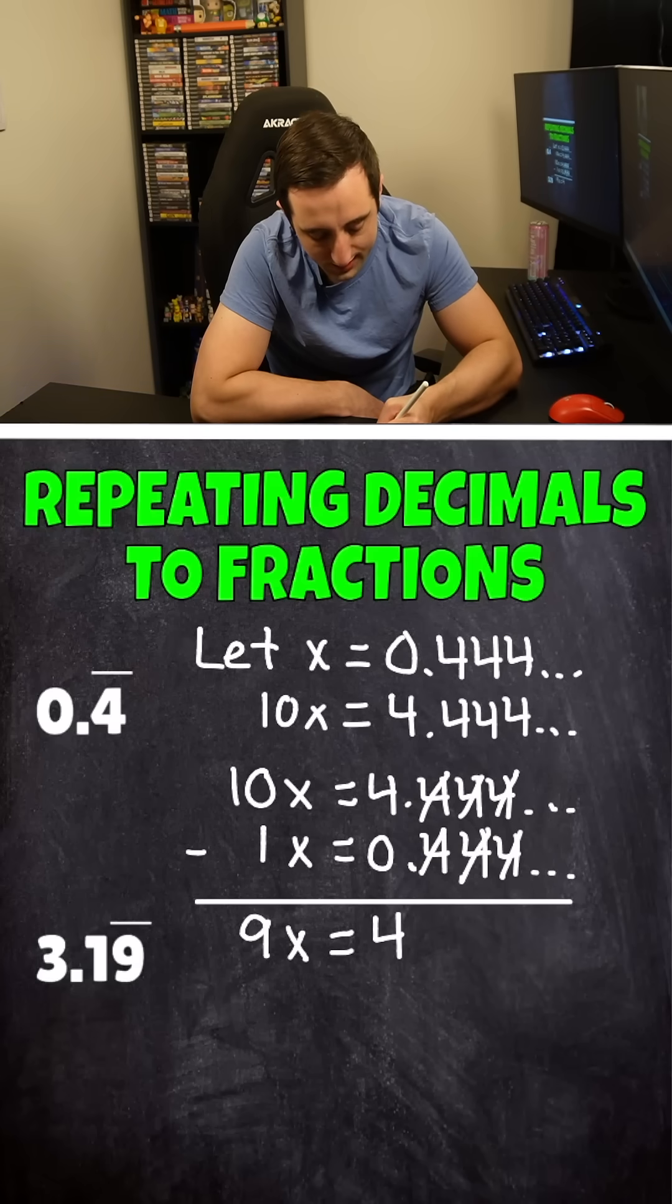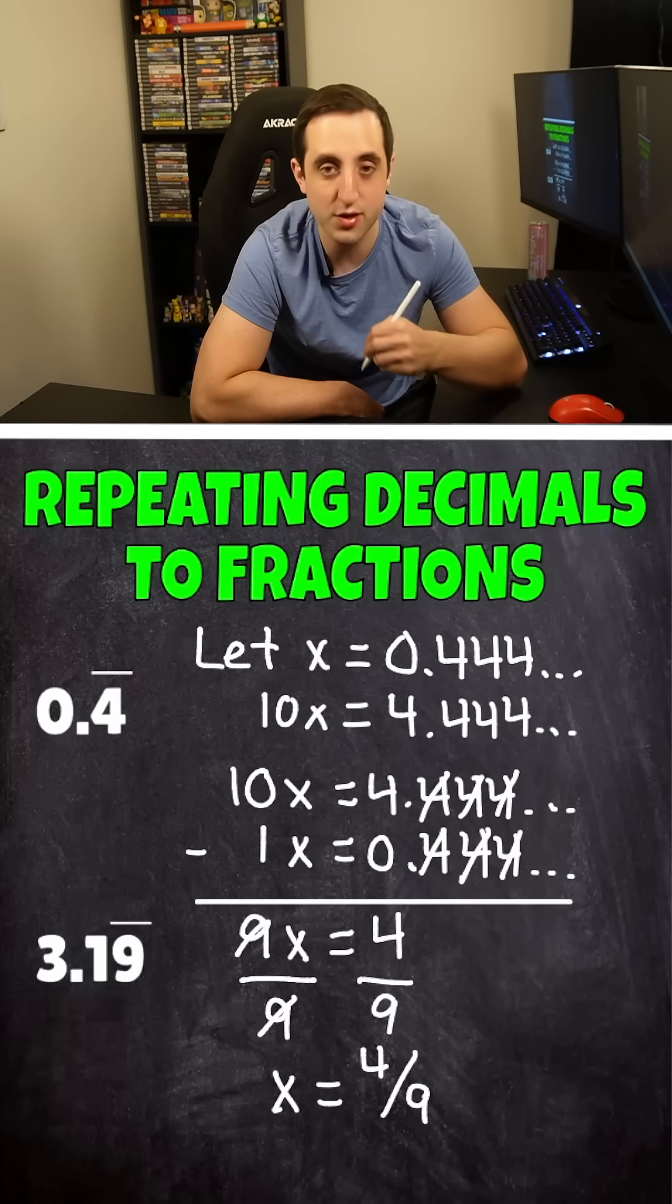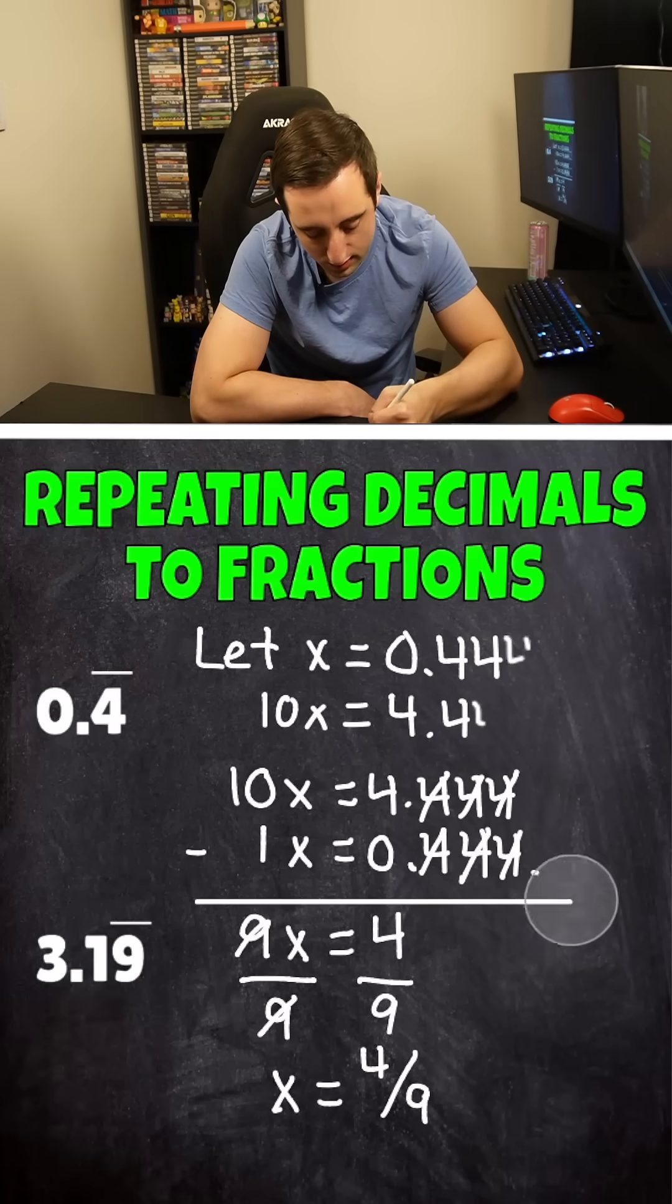And now let's isolate x, get it by itself, get rid of the 9 by dividing by 9 on both sides. The 9s cancel. And we end up getting this repeating decimal turned into a nice, clean, simplified fraction of 4/9 for the first one.